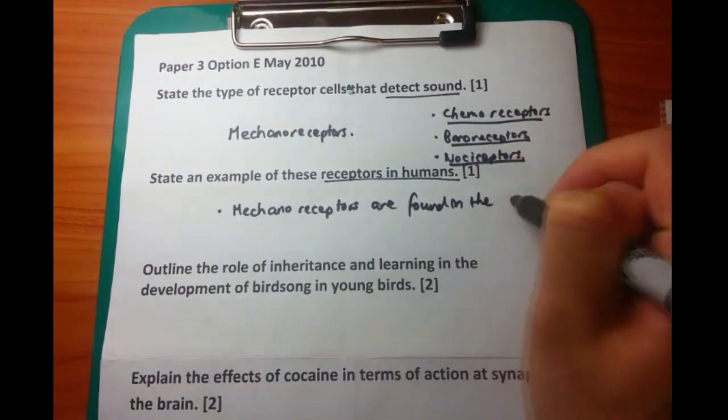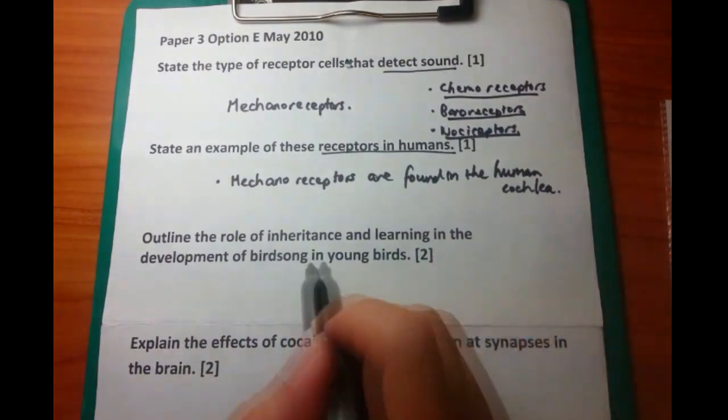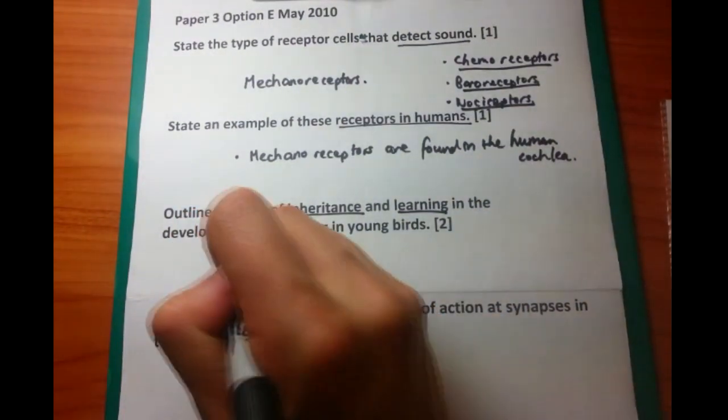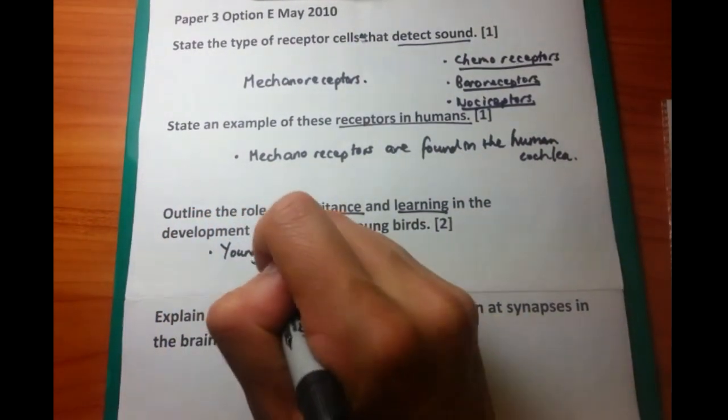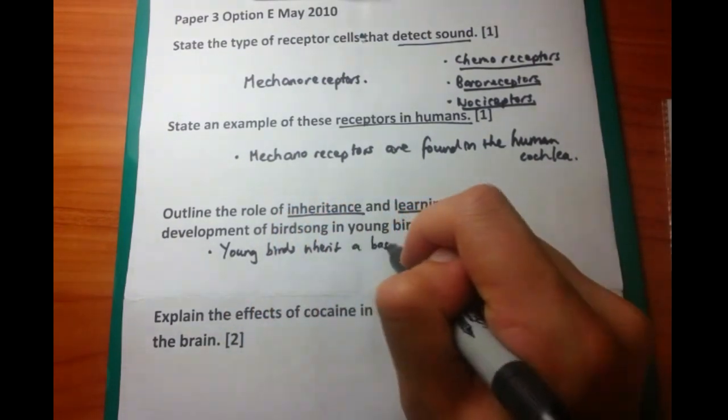Now we get on to the somewhat harder questions. Firstly, outline the role of inheritance and learning in the development of birdsong in young birds. It's a bit of a lame question, but the two points correspond to half of those points being allocated for talking about inheritance, the other half for talking about learning.